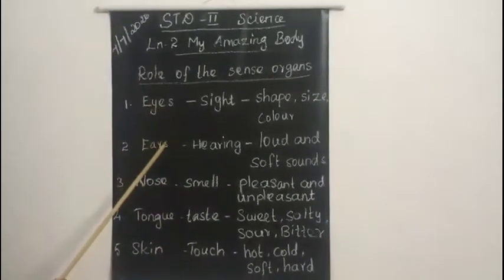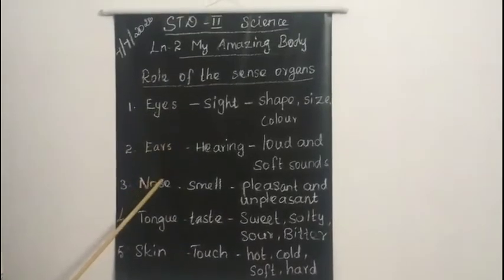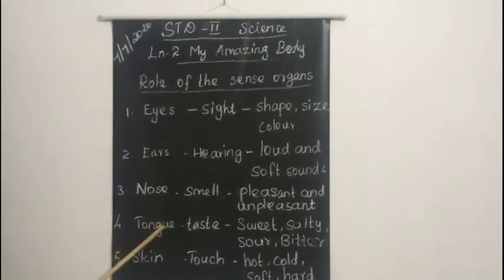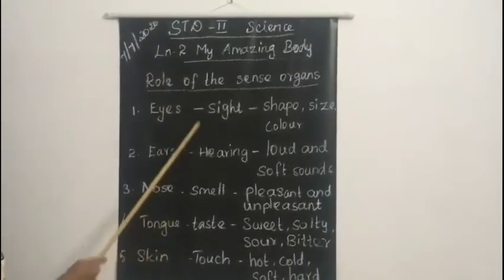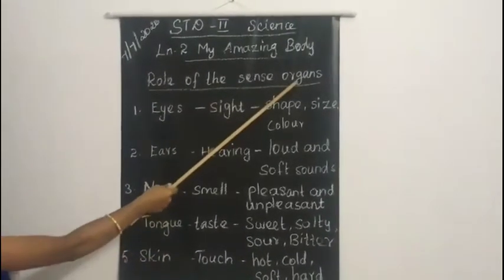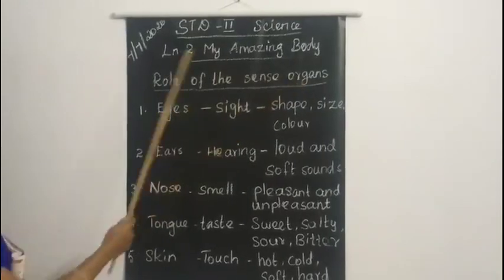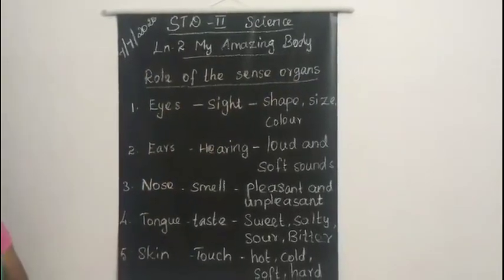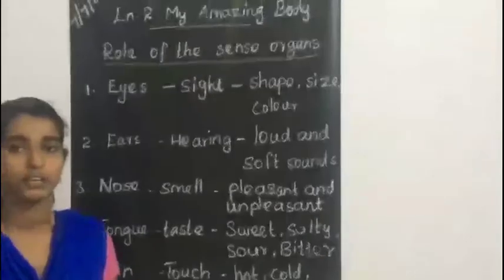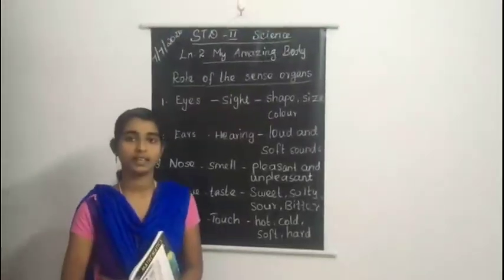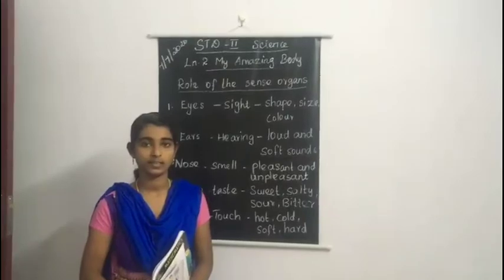So the five sense organs are: eyes, ears, nose, tongue, and skin. These are the sense organs. Okay students, I hope you all understood. Thank you — see you in the next class. Bye!